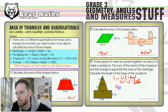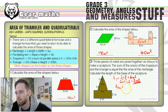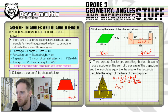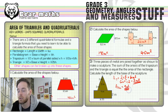Next, the area of the trapezium: add the parallel sides — 2 plus 4 equals 6. Half that gives 3. Multiply by the perpendicular height of 3, giving 9 meters squared.